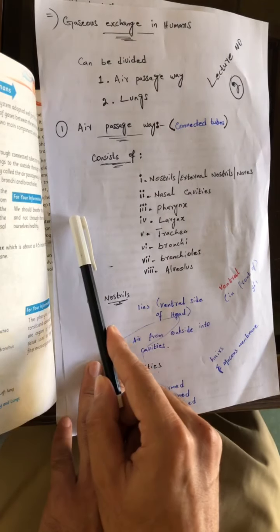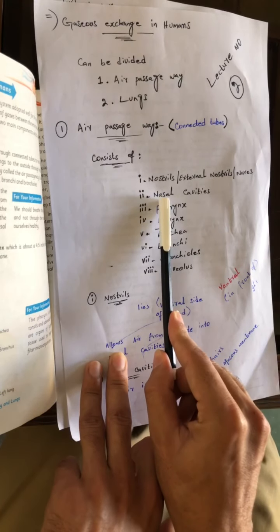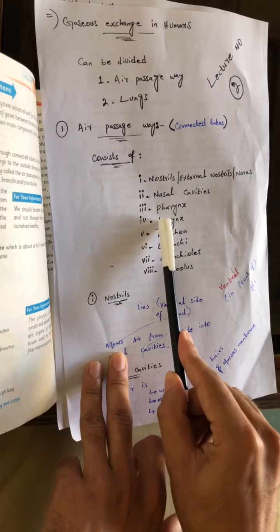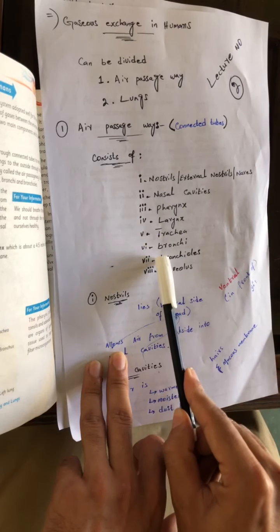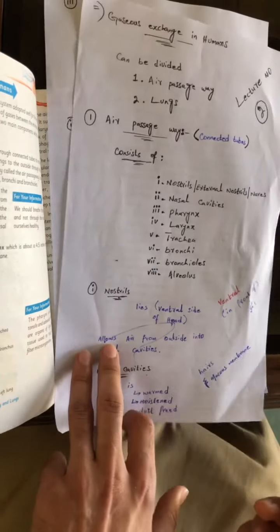It consists of the following organs: The first one is the nostrils, also known as external nostrils or nares, the second is nasal cavities, then pharynx, larynx, trachea, bronchi, bronchioles, and alveoli.